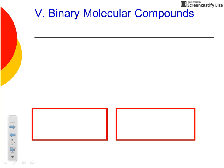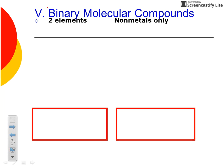We're going to learn about how to name binary molecular compounds today. I want to reiterate a couple of things: we see the word binary with ionic compounds, with molecular compounds, and also with our acids. So don't just associate binary with one type of compound. Binary simply means that the compound is made up of two elements — remember, bi means two.